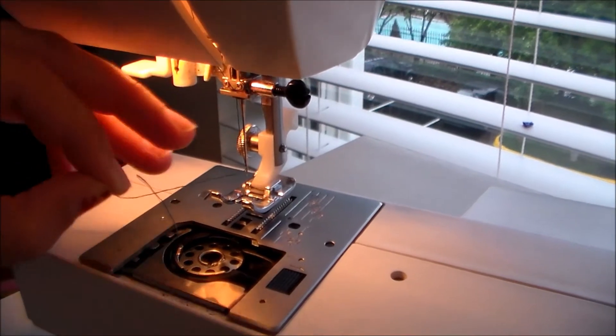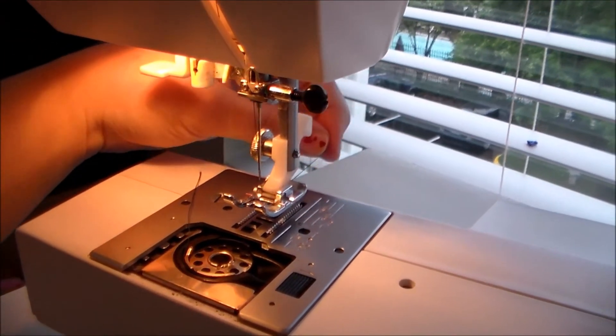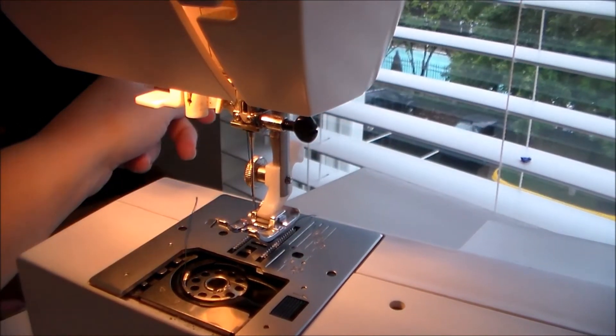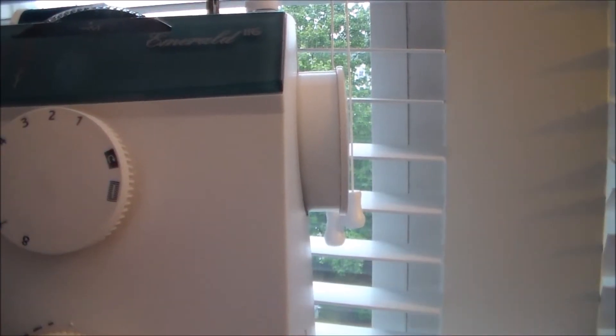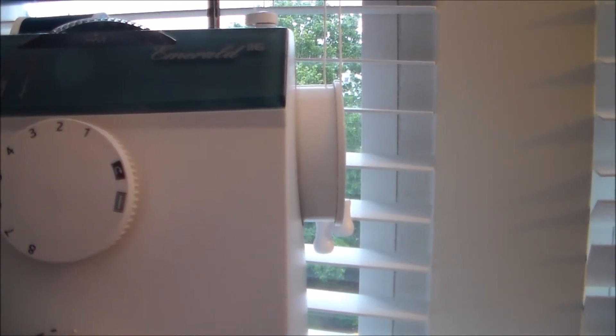Then we're going to just take that remaining tail of thread, bring it through the foot and we're going to pull it back towards the back of the machine. Once you have everything in place we're then going to turn the hand crank to manually start the stitching.